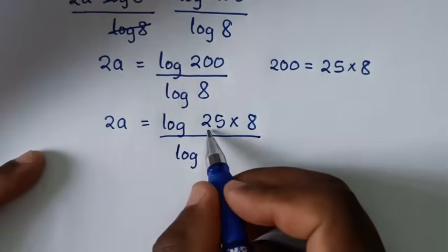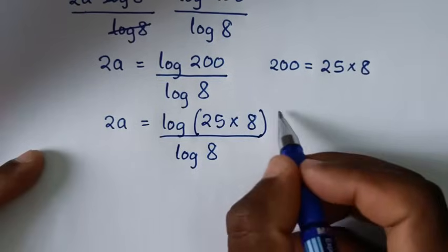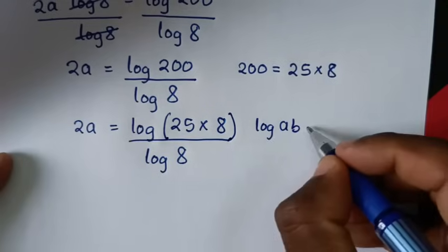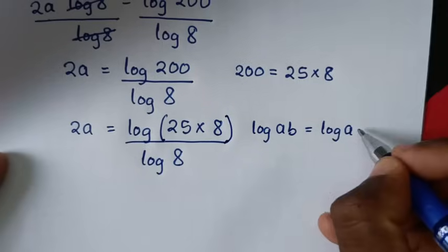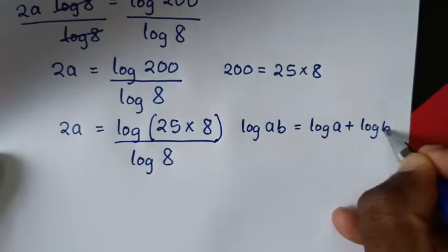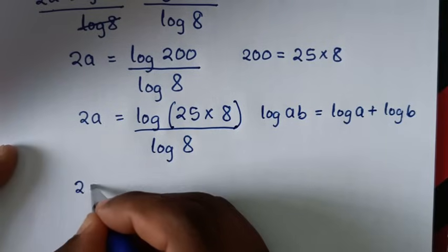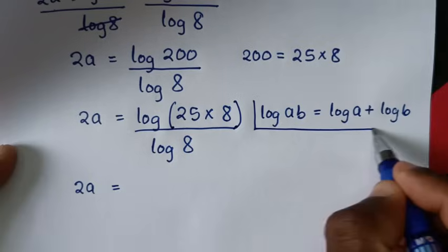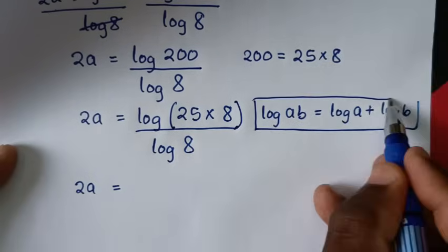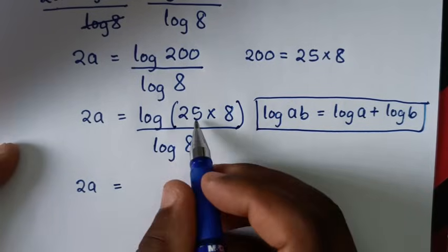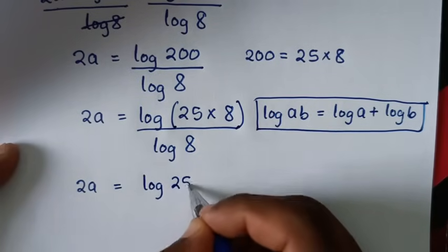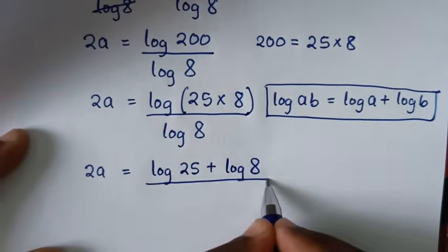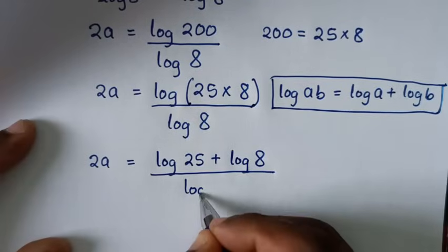Then log of 25 times 8 is in the form of log of a times b, which is equal to log of a plus log of b. So it will be 2a is equal to log of 25 plus log of 8, then over log of 8.